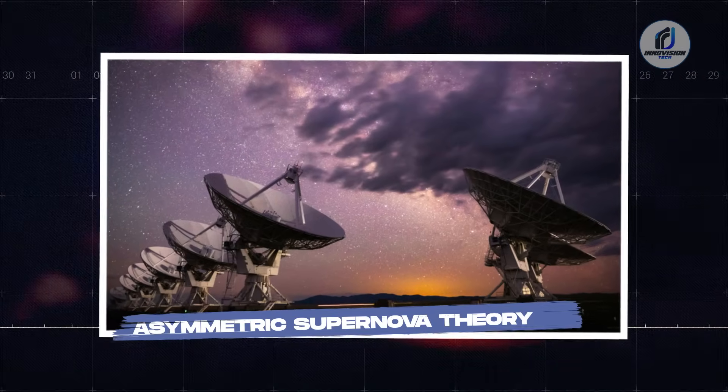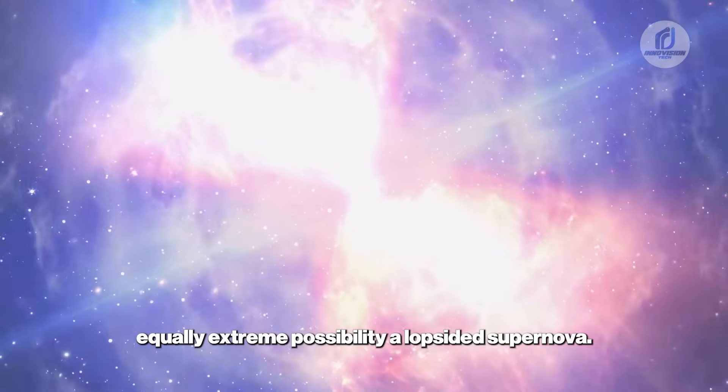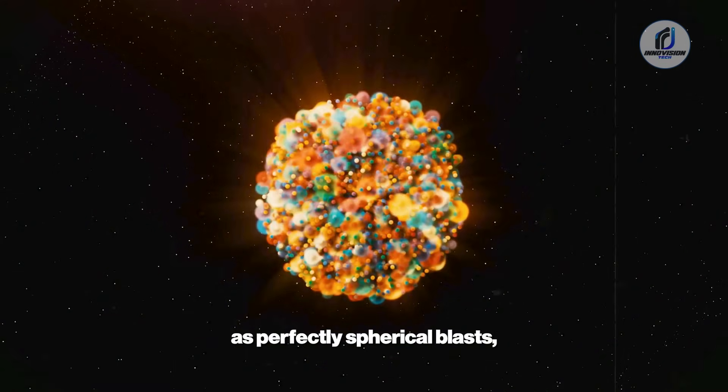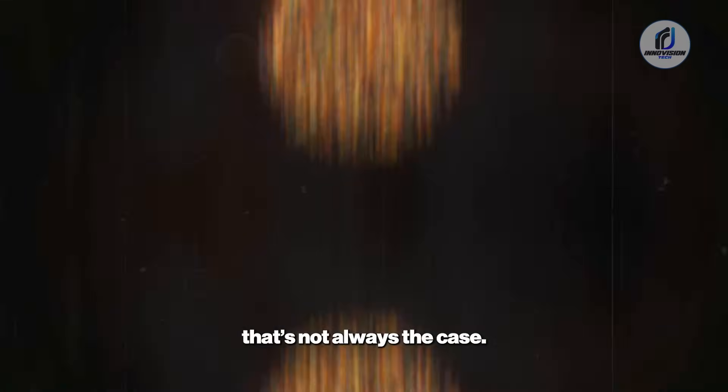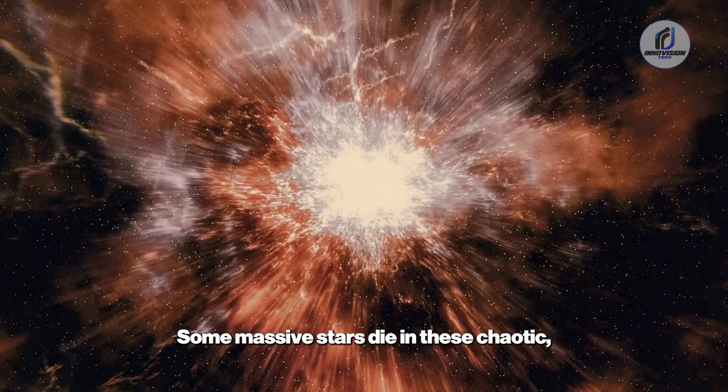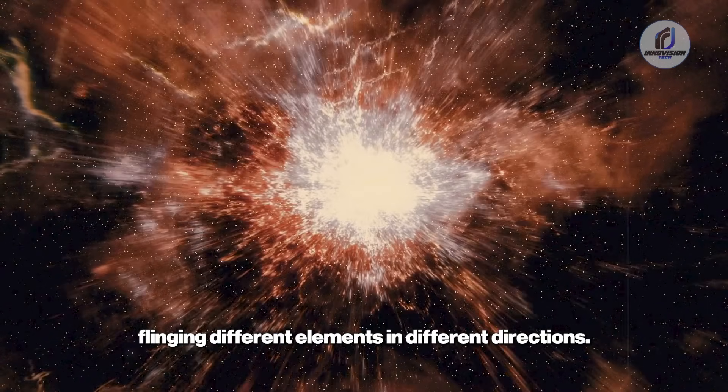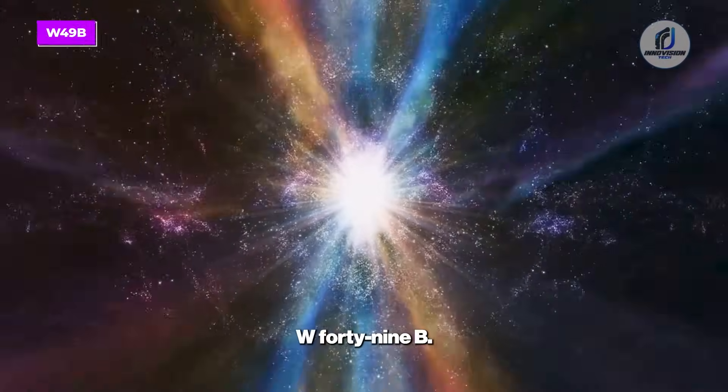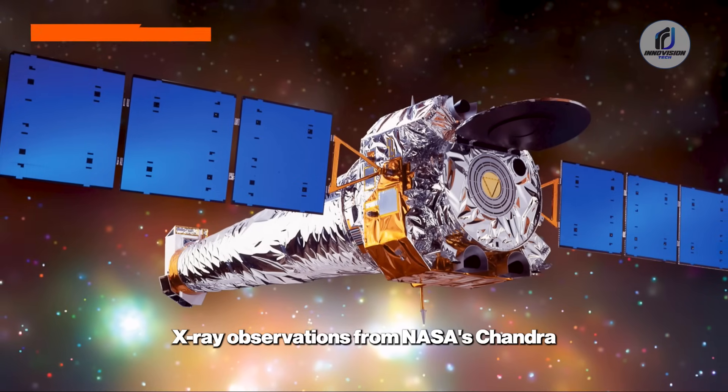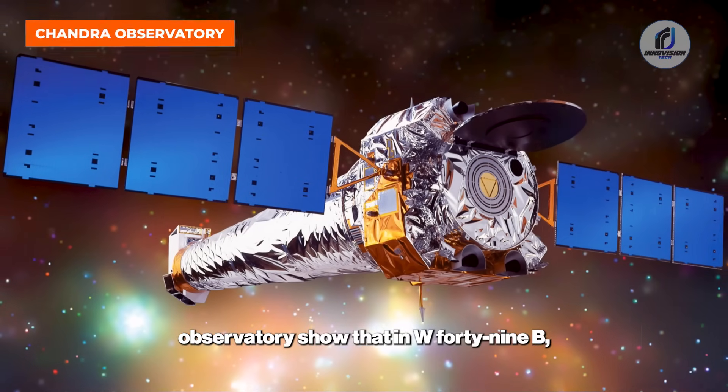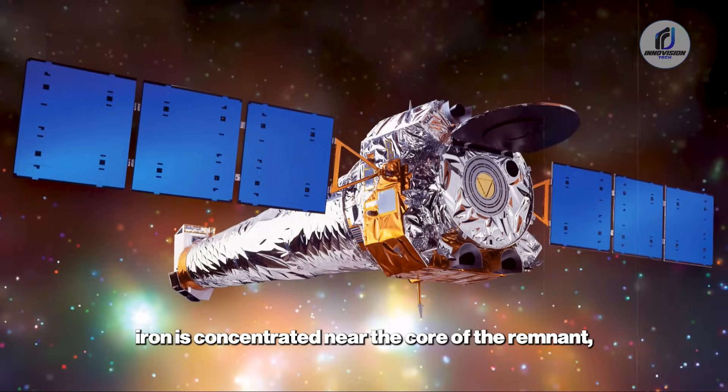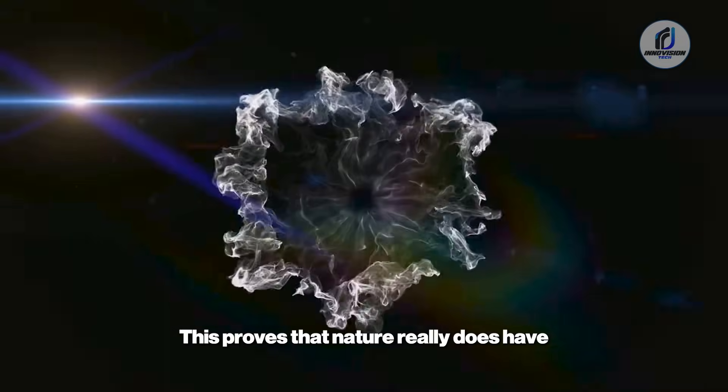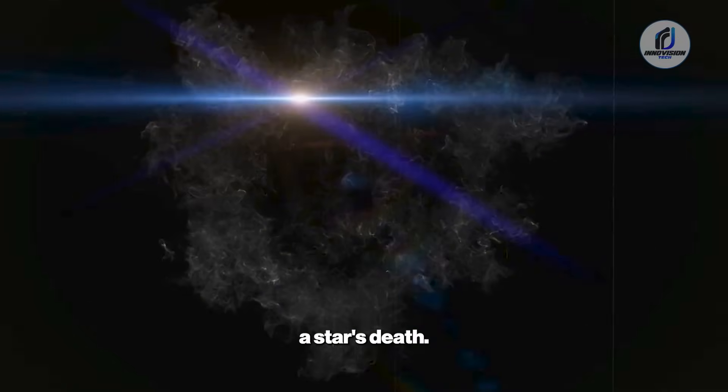Asymmetric supernova theory. There's another, equally extreme possibility, a lopsided supernova. We tend to think of supernova explosions as perfectly spherical blasts, but that's not always the case. Some massive stars die in these chaotic asymmetric explosions, flinging different elements in different directions. Astronomers have actually seen this in action by studying supernova remnants like W49B. X-ray observations from NASA's Chandra Observatory show that in W49B, iron is concentrated near the core of the remnant, while other elements were ejected outward in high-speed jets. This proves that nature really does have a mechanism for separating elements during a star's death.